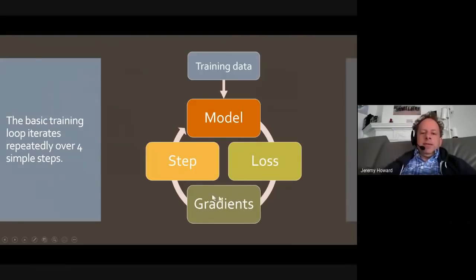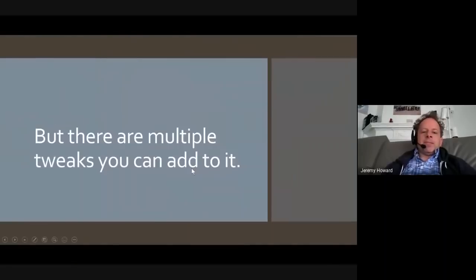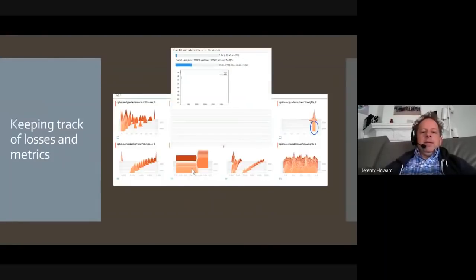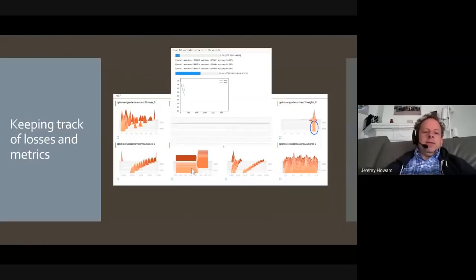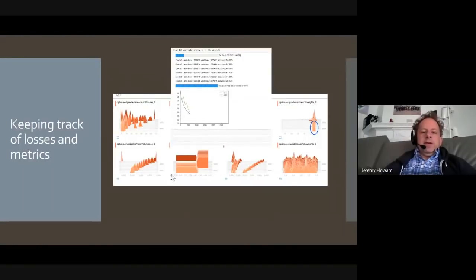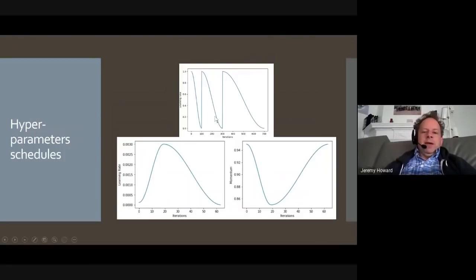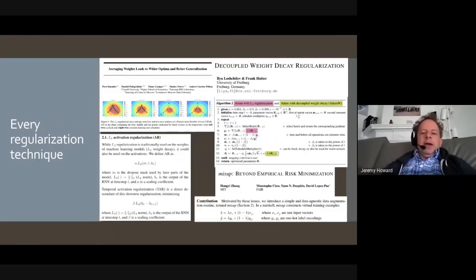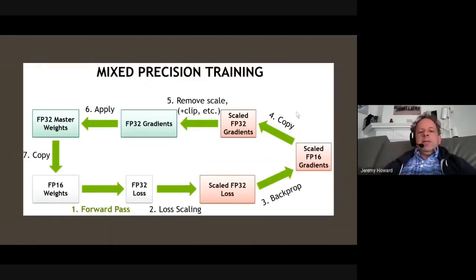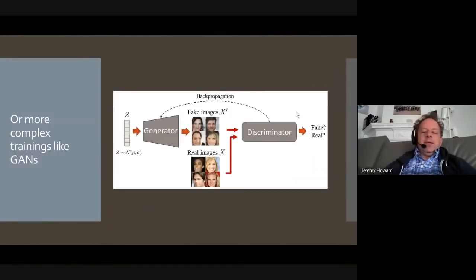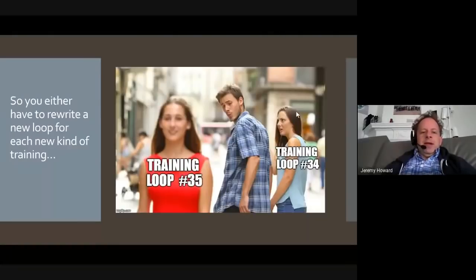So this is what that loop looks like. Run the model. Get the loss. Do the gradients. Step the optimizer. Do that a bunch of times. But you want to do something interesting, you'll need to add something to the loop to do keeping track of your training statistics in TensorBoard or in FastProgress or whatever. You might want to schedule various hyperparameters in various different ways. You might want to add various different categorization. You may want to do mixed precision training. You may want to do GANs.